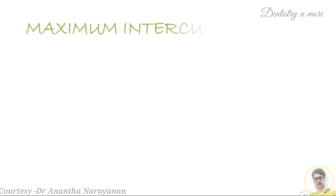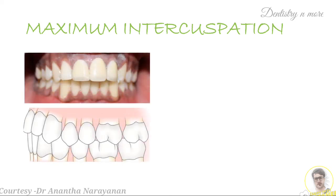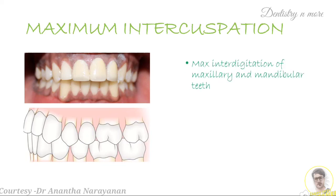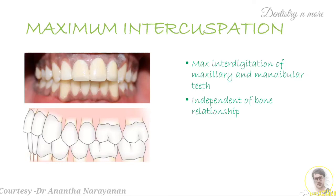Moving on to the final concept — maximum intercuspation. If you take a look at these pictures, they have emphasized only the teeth. That means maximum intercuspation is independent of bone and is all related to the teeth. Maximum intercuspation is the complete digitation of the maxillary and mandibular teeth. The position at which there is complete digitation where all the teeth occlude is called maximum intercuspation, meaning it is independent of the bone relationship.